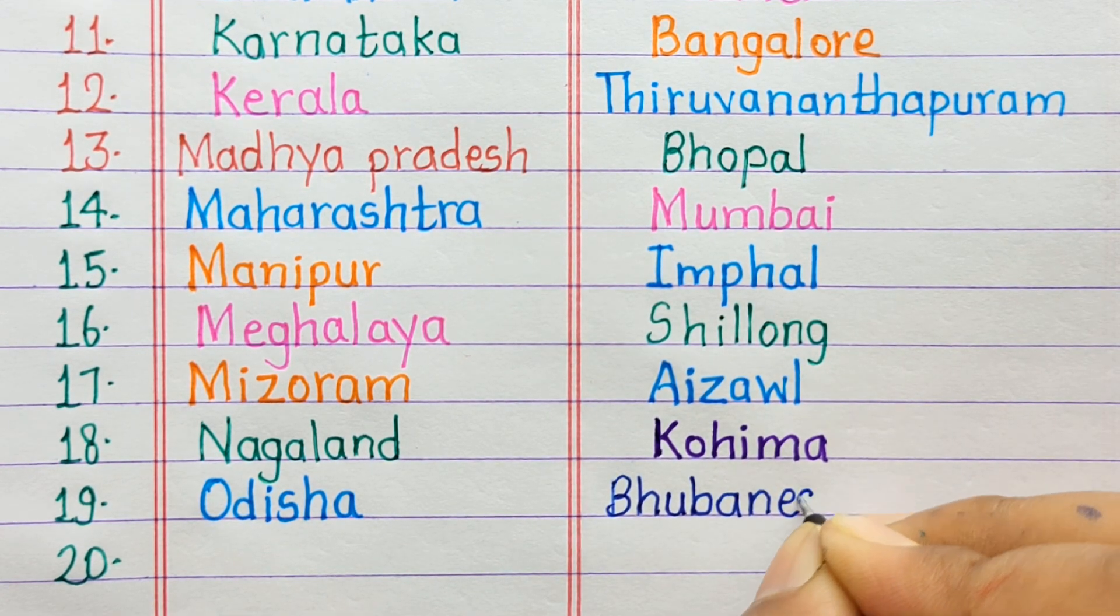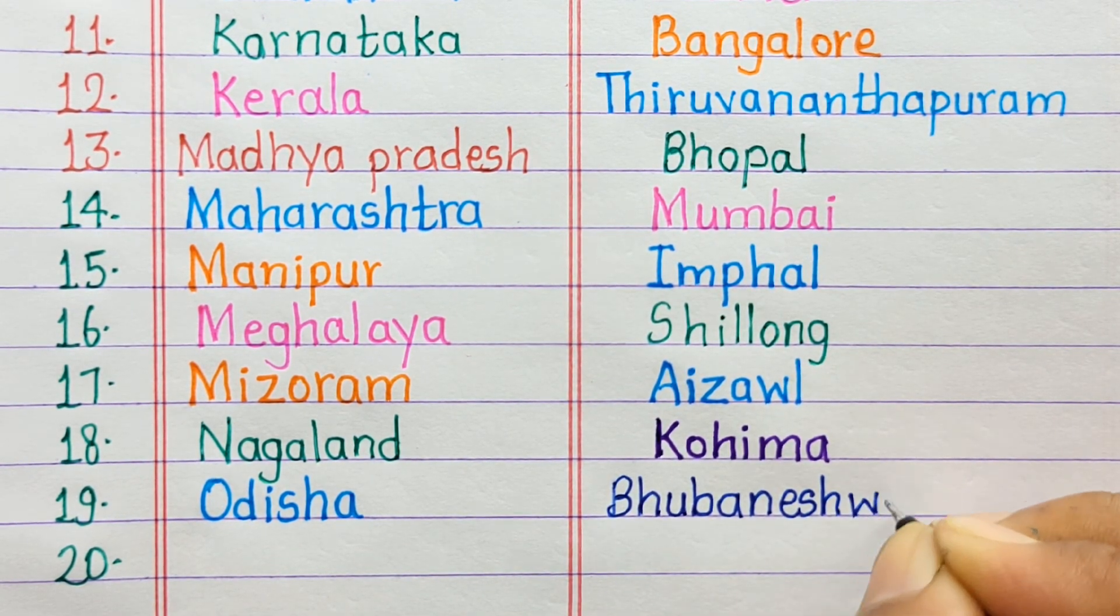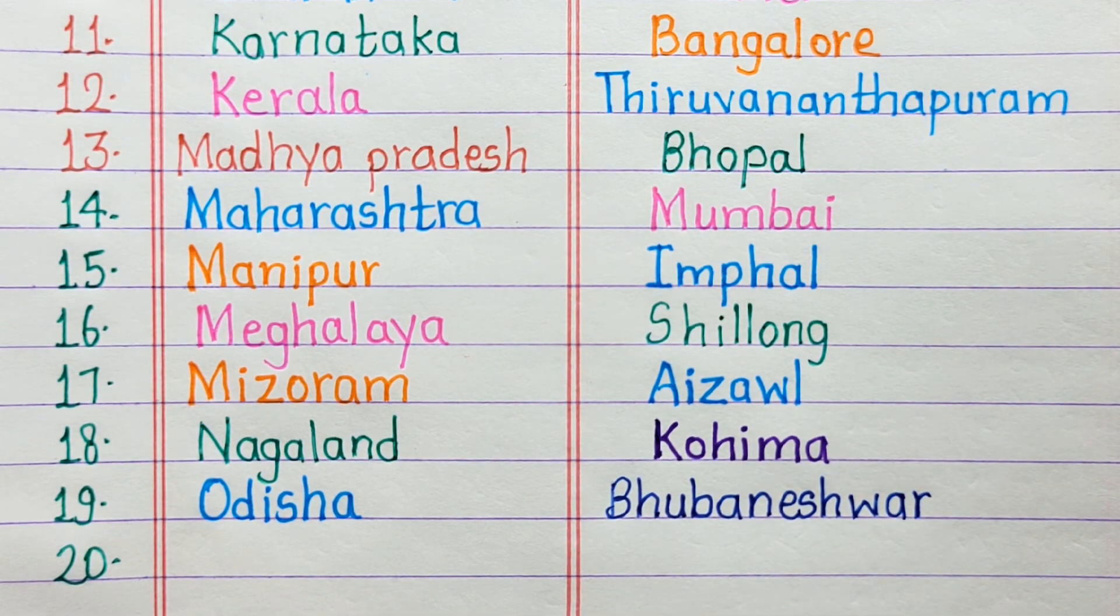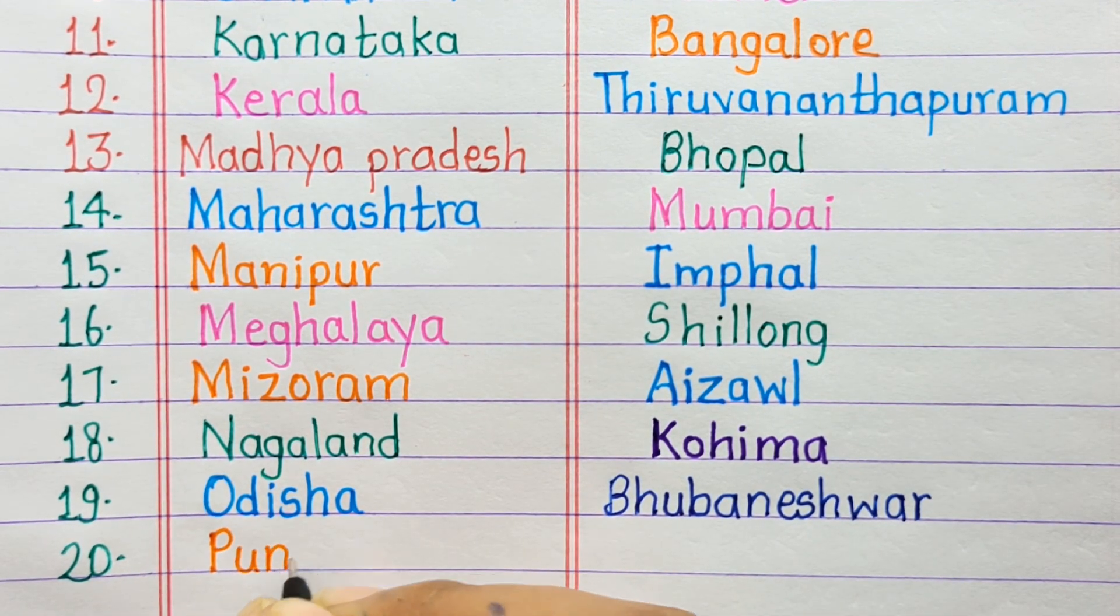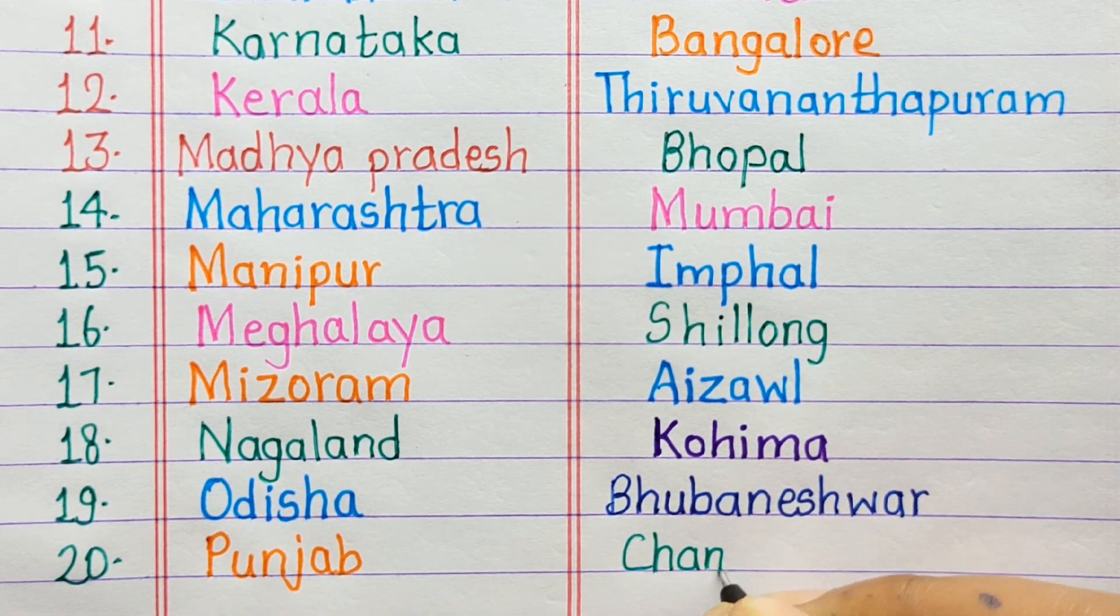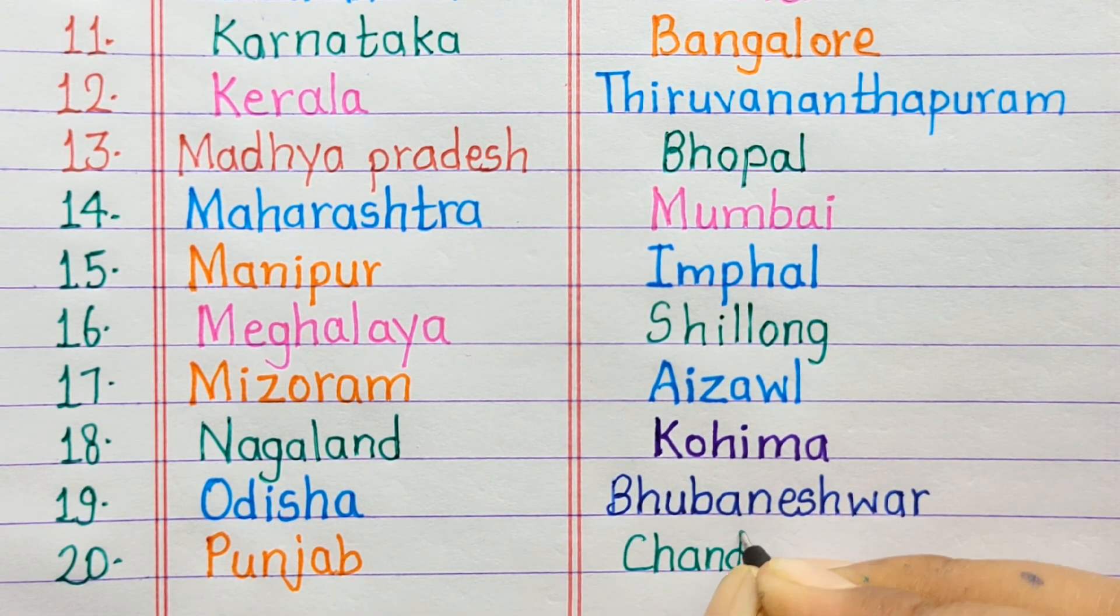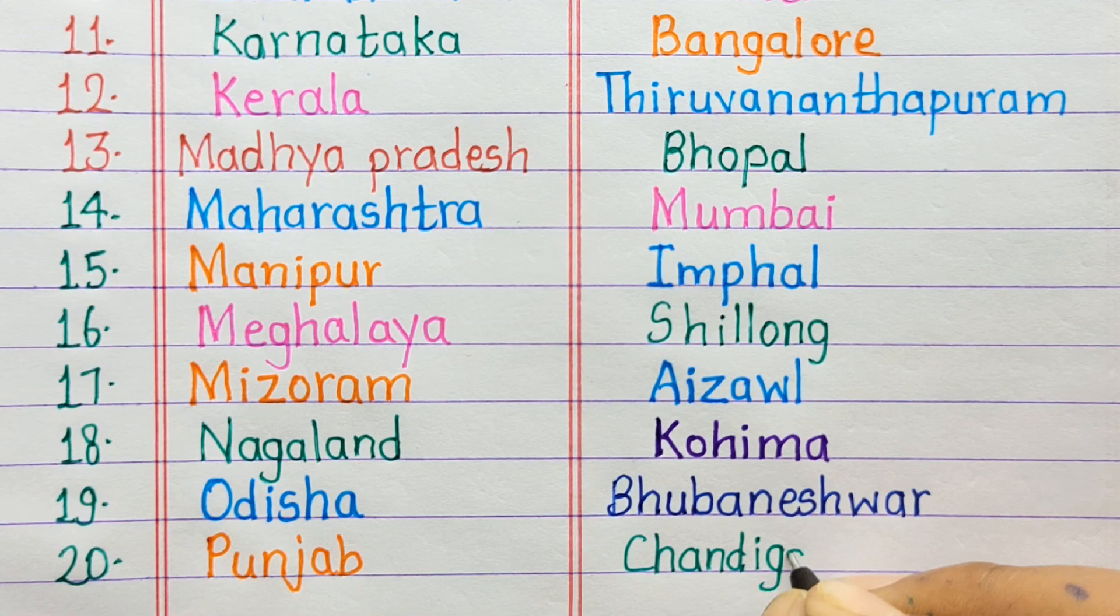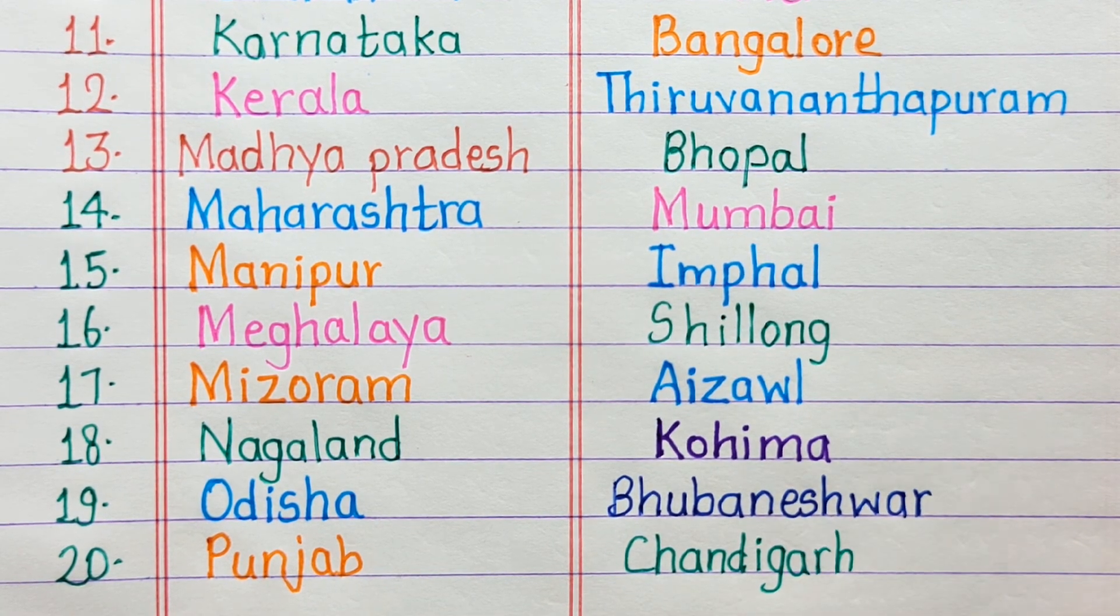Number 19. Odisha, Bhubaneswar. Number 20. Punjab, Chandigarh.